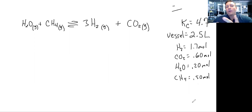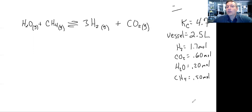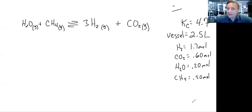So here was the problem. It wrote out the reaction for you: water in the gaseous state plus methane reacting to form three moles of hydrogen gas and one mole of carbon dioxide. It told you that the Kc value — the equilibrium concentration constant — is 4.7, and the vessel that all these gases were placed in is 2.5 liters.